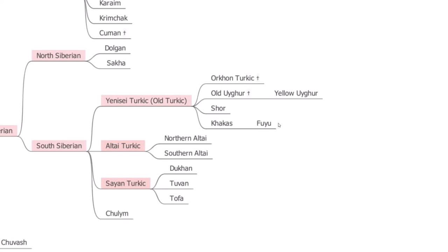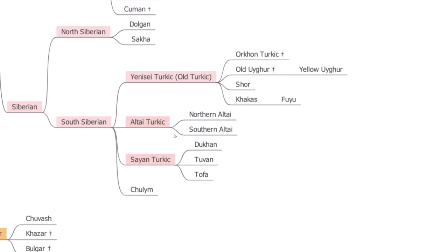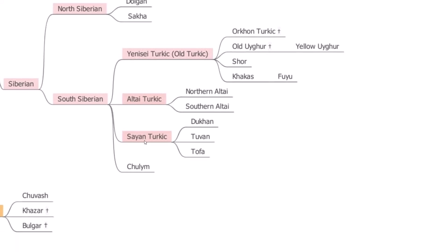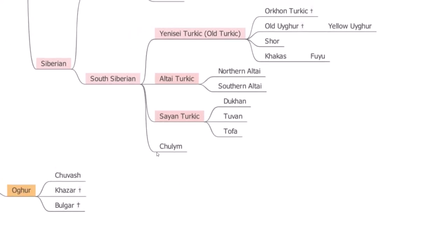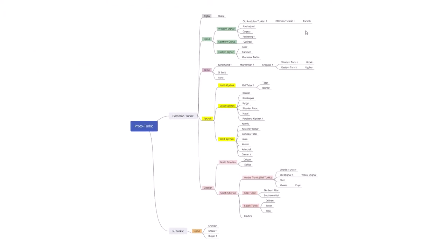We have Altai Turkic — Northern Altai and Southern Altai, spoken in the modern Altai Republic — and Sayan Turkic spoken in the Sayan Mountains. We have Dukha and Tuvans, Tofalar, and also a distinct branch — Chulym — which has only about 10 or 20 speakers. These are the main languages, though there are also dialects. I hope you enjoyed this video. If you have any questions or comments, please write them below. Thanks for watching.